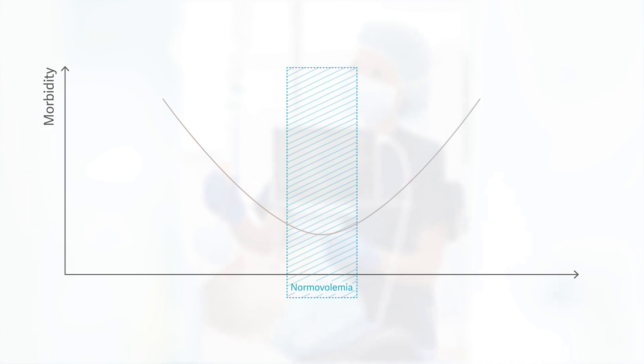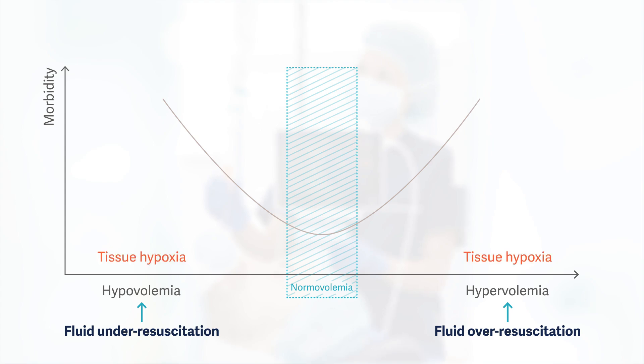Keeping the patient's fluid status balanced between hypovolemia and hypervolemia is the most effective way to combat global tissue hypoxia, shock, and multi-organ failure.